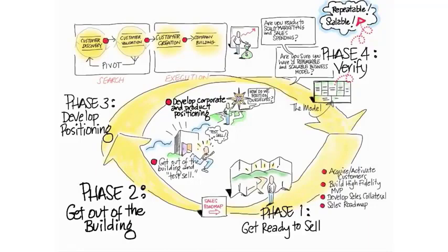And so customer validation in its detail, again, has two tracks, one for physical, one for web mobile. Get ready to sell, sell to early customers who we call early evangelists, develop positioning, and again, either pivot or proceed.